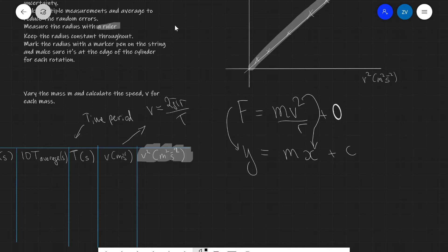If the force is on the y-axis and v squared is on the x-axis, what is left for our gradient? Actually let's call our gradient grad simply because the mass is already called m and I don't want to cause any further confusion. What is left for our gradient then will actually be the mass over the radius, and if we wanted to we could find the mass of the bung using the following equation.